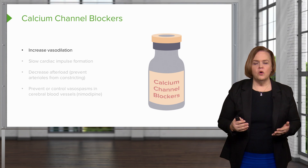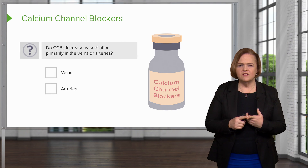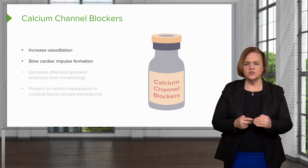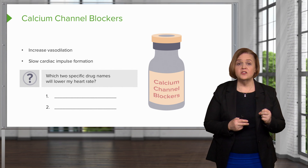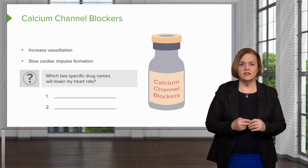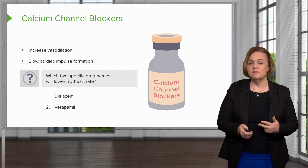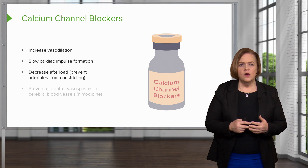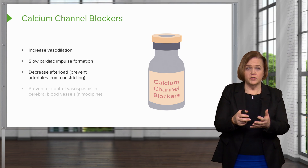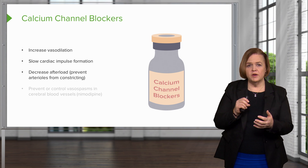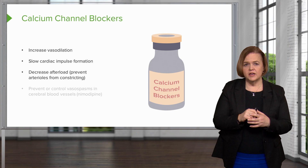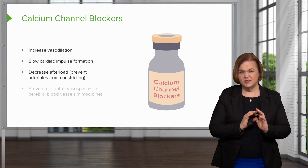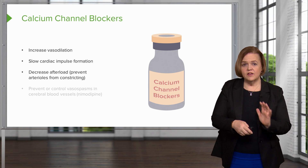Calcium channel blockers as a whole increase vasodilation — and that's primarily in the arteries, not the veins. They'll also slow cardiac impulse formation. Which two specific drug names slow cardiac impulse formation and lower heart rate? Diltiazem and verapamil. How is afterload decreased by a calcium channel blocker? Anytime I can dilate arterioles — those control valves — it's going to be easier for the left ventricle to push blood out. Afterload is the resistance those vessels create; if those arterioles are dilated, the heart has a much easier job.